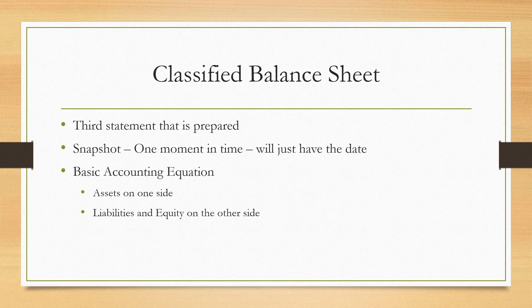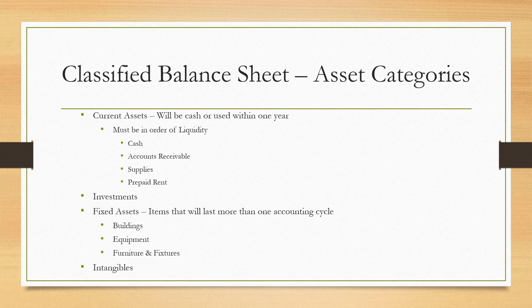The third statement is our classified balance sheet. The balance sheet is just a snapshot — one moment in time — so the header has just a date, not a period. It represents the basic accounting equation with assets on one side and liabilities and equity on the other. For the classified balance sheet, our asset categories include current assets, investments, fixed assets, and intangibles. Current assets are going to either be turned into cash or used within one year.